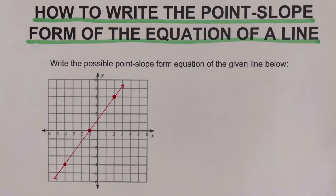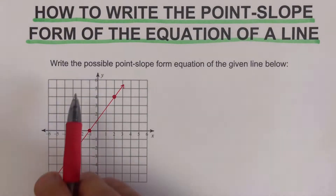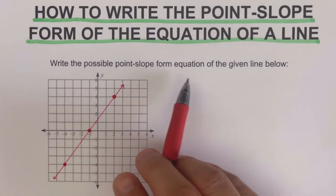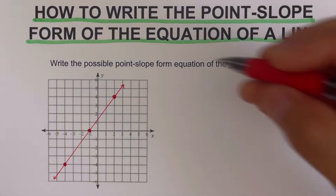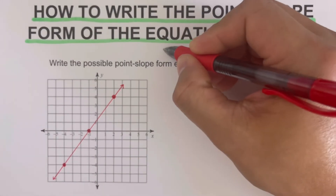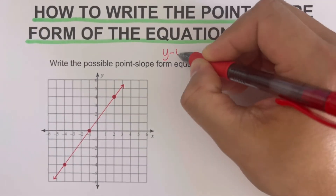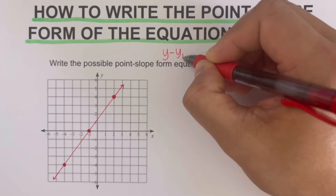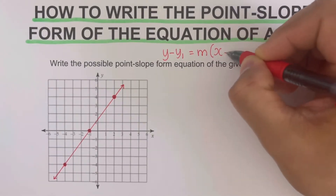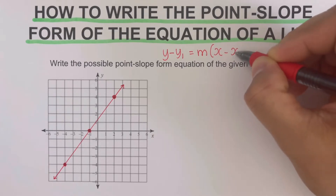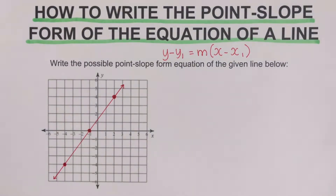Going back to the example, we're supposed to write the possible point-slope form equation of this given line. We remember that the point-slope form equation of a line is y minus y₁ equals m times the quantity x minus x₁. That's the equation for the point-slope form.